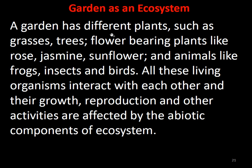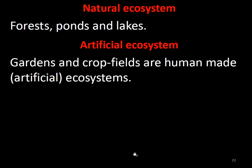Can we consider a garden as an ecosystem? Yes. A garden has different plants such as grasses, trees, and flower-bearing plants like rose, jasmine, and sunflower, and even animals like frogs, insects, and birds. These plants, animals, and all living organisms interact with each other, and their growth, reproduction, and other activities are affected by the abiotic components of the ecosystem.